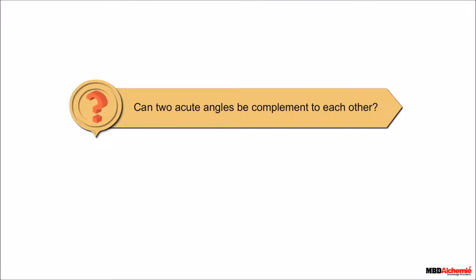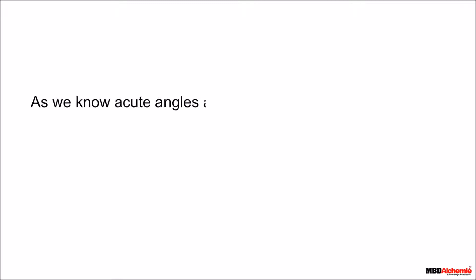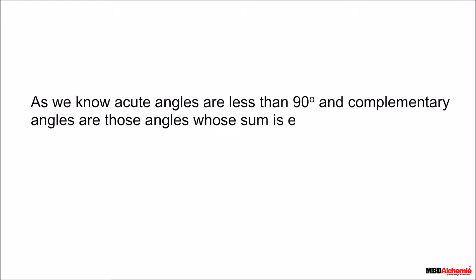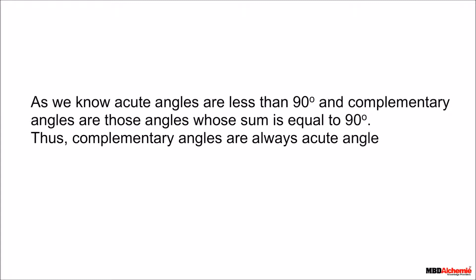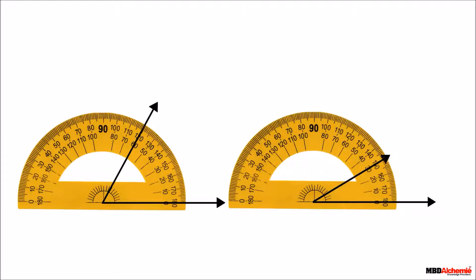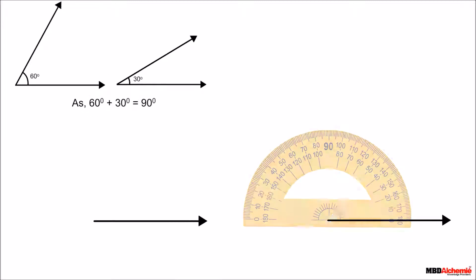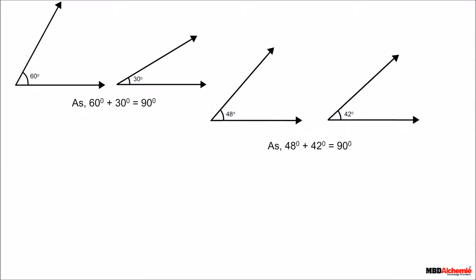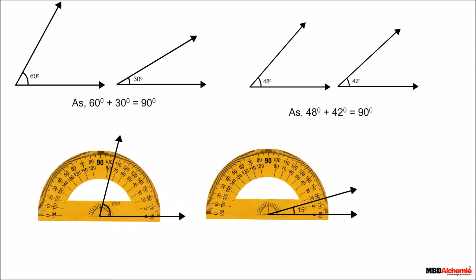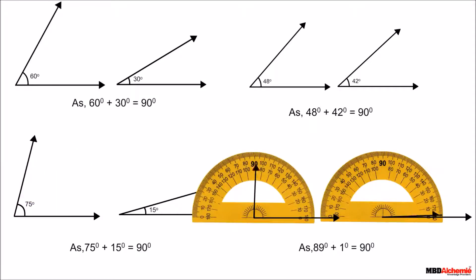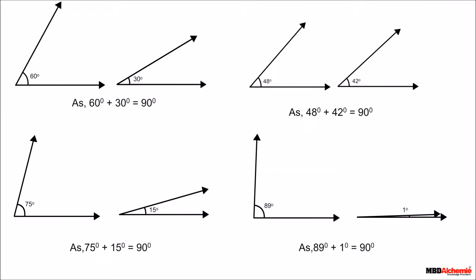Can two acute angles be complementary to each other? Acute angles are less than 90 degrees, and complementary angles are those whose sum is equal to 90 degrees. Thus, complementary angles are always acute angles. Examples include 60° and 30°, 48° and 42°, 75° and 15°, and 89° and 1°.